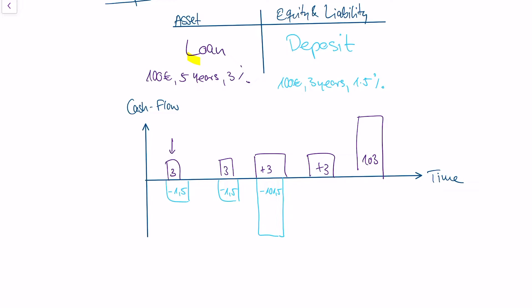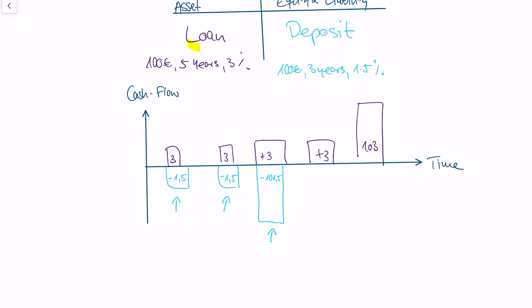The deposit is where the bank lent money, so the bank has to pay 1.5 euros interest in the first years and repay the full deposit in the third year. This is the cash flow structure of this balance sheet. In IRRBB, there are two perspectives to understanding the risk that this balance sheet encompasses when it comes to market risk.